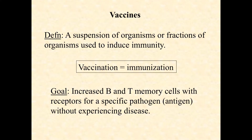Let's talk for a few minutes about the basics of vaccines. A vaccine is really just a suspension of either whole intact pathogens or just fractions of those pathogens, and the purpose is to induce immunity. Specifically, it's to develop a memory response in the form of memory T cells, memory B cells, and even some circulating antibodies.